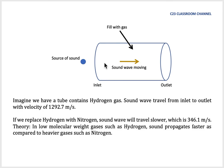The sound speed traveling in nitrogen is 346.1 m/s. So the theory is, in low molecular weight gases such as hydrogen, sound propagates faster compared to heavier gases such as nitrogen.